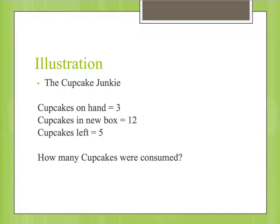The next morning, he goes and takes his exam. When he comes home, he decides to find out how many cupcakes he ate while studying. He counts what's left and he has five cupcakes in his cupboard. How many cupcakes were consumed? This illustrates our cost of goods sold inventory procedure in a very simple manner.